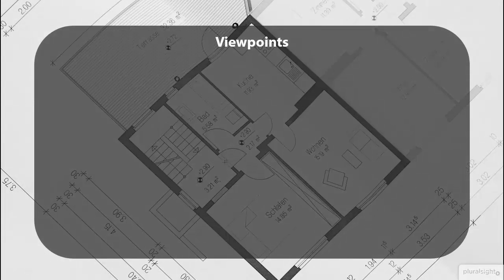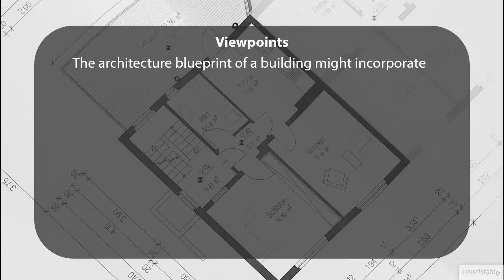To use an analogy from the civil engineering industry, the architecture blueprint of a building may include many different viewpoints. You may have one viewpoint representing the plumbing requirements, another representing the electrical and data wiring or cabling plan, and another viewpoint representing the general layout and facades of the building for marketing purposes. Similarly, in the case of enterprise architecture, different stakeholders will need to see the architecture from different vantage points that satisfy their needs and concerns.